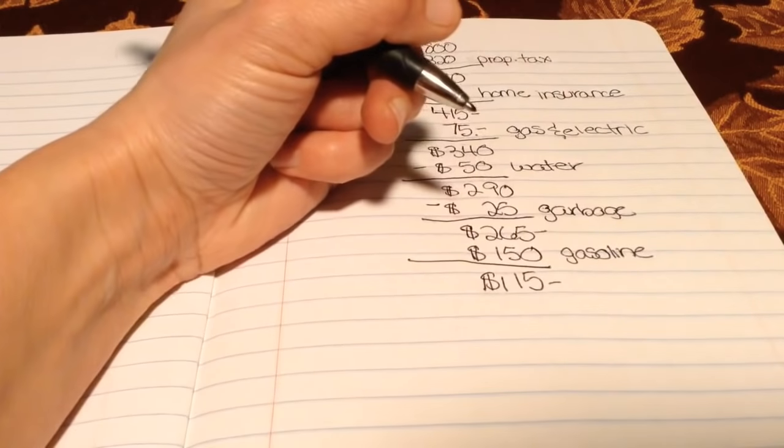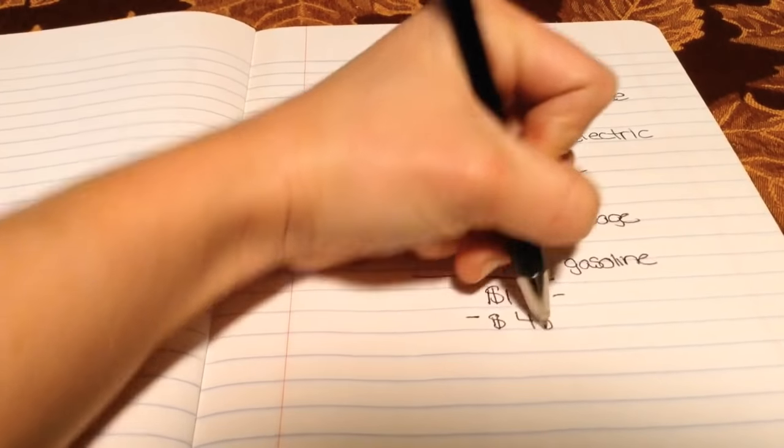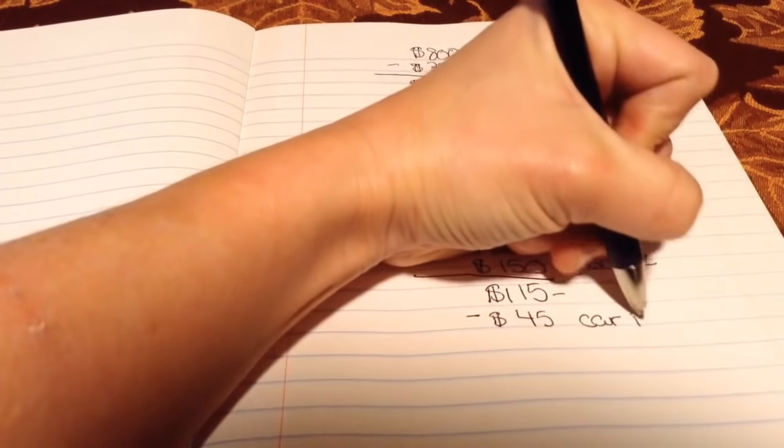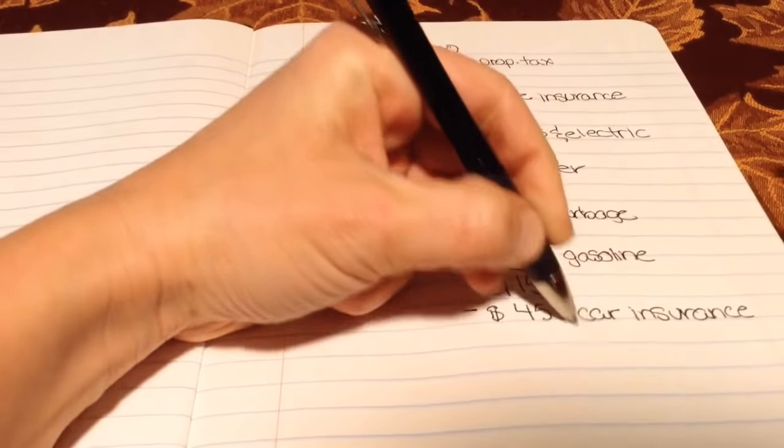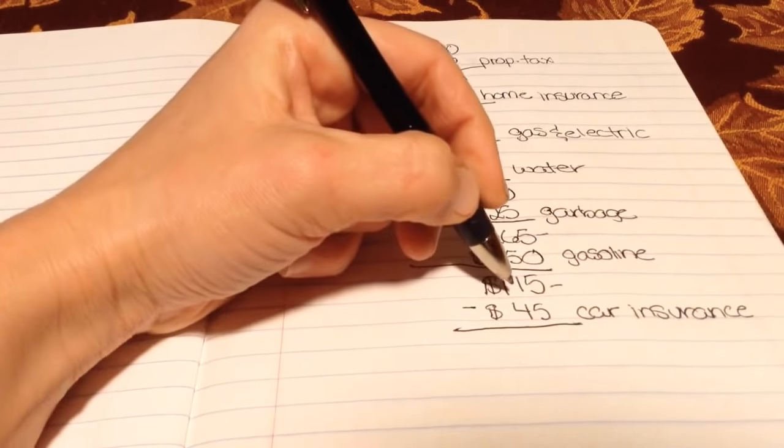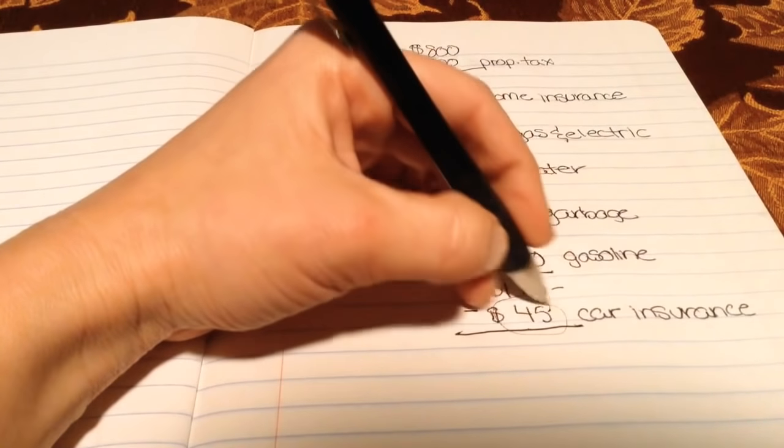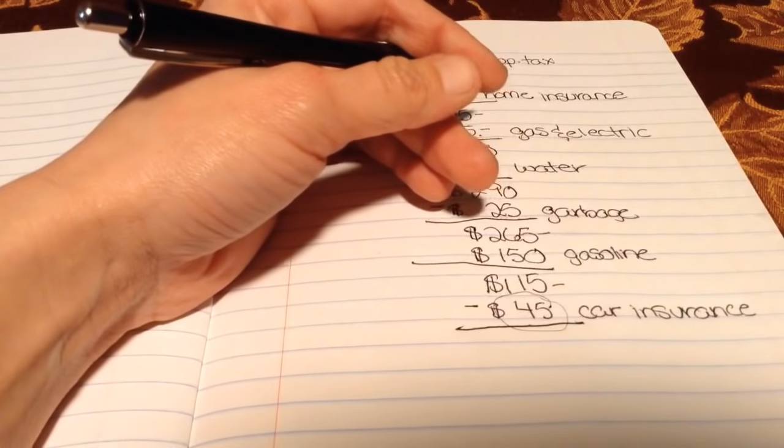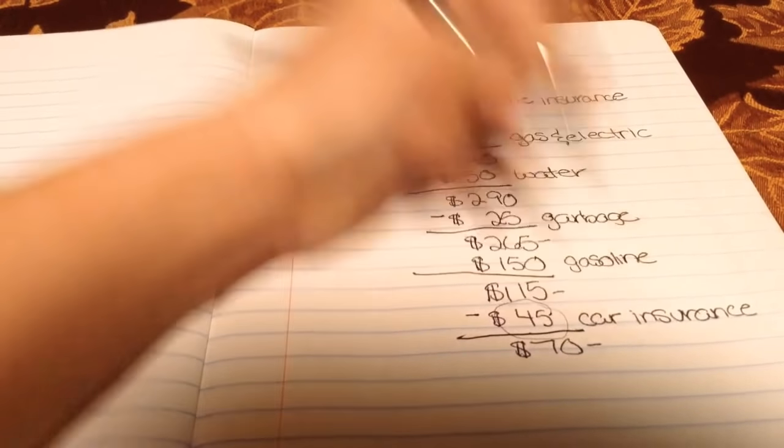So that leaves you with $115. In addition to the gasoline, you're also going to need car insurance. Car insurance has an average of about $45. This will depend on your driving record, where you live, and everything else, but mine's actually about $35. But this is just a broad term. My car is 20 years old now and it's not worth hardly anything. So that leaves you with $70.